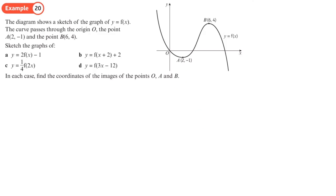We're given the original graph with two transformations on the first one. The two in front is going to stretch it by two in the y direction, and then this is going to move the whole graph down by one. So it's going to stretch it by two that way, so all the y coordinates get doubled, and then the whole graph is going to move down, which means we take one away from the y coordinates.